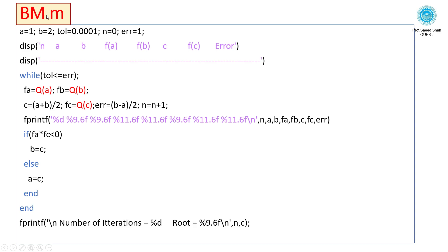BM.m Bisection Method: starting value a=1, b=2, tolerance tol, m=0, err=1. This will show the output on the screen.